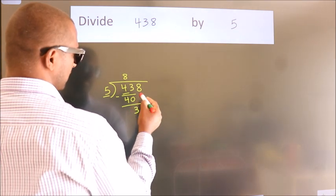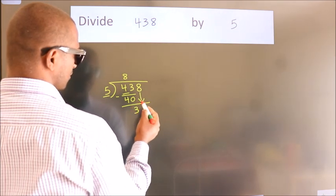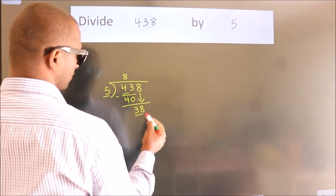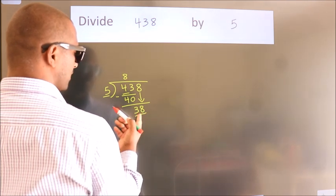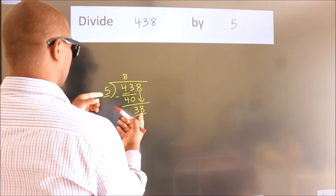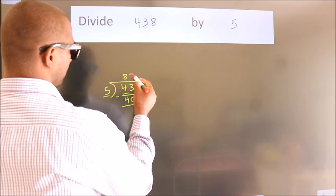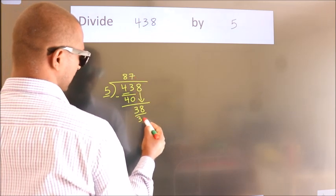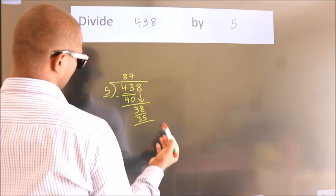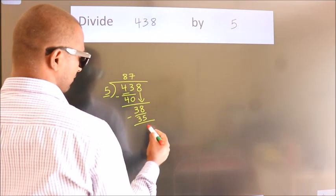After this, bring down the next number. So 8 down. So 38. A number close to 38 in the 5 table is 5 times 7, 35. Now we subtract. We get 3.